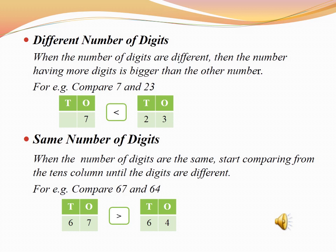For example, here we have to compare 7 and 23. Two numbers are given here: 7 and 23, and we have to tell which number is bigger. The number which has more digits is the bigger number. So which number here has more digits? Yes, 23. So between 7 and 23, which number is bigger? 23.